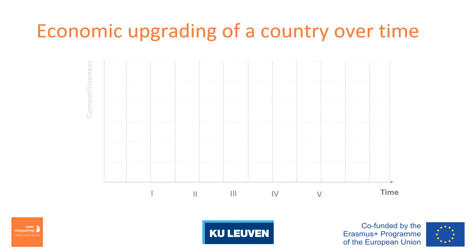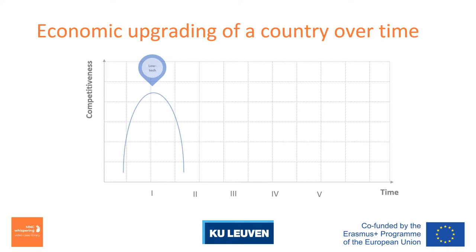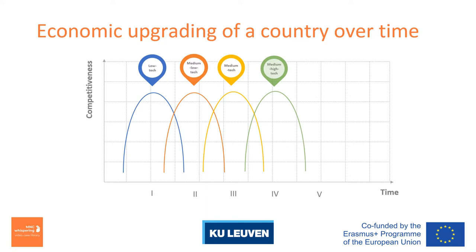The flying geese model intends to explain the catching-up process of industrialization of late-comer economies from the following aspects. First, there is intra- and inter-industry upgrading of a country over time. The process focuses on the gradual development of industries in a manner compatible with the national economy's changing factor and technological endowments. This includes the sequence within industries from consumer goods to capital goods, and from simple articles to more complex and refined products, but also includes a shift from lower value-added, lower technology-intensive, more labor-intensive and less capital-intensive industries, to higher value-added, higher technology-intensive, less labor-intensive and more capital-intensive industries.